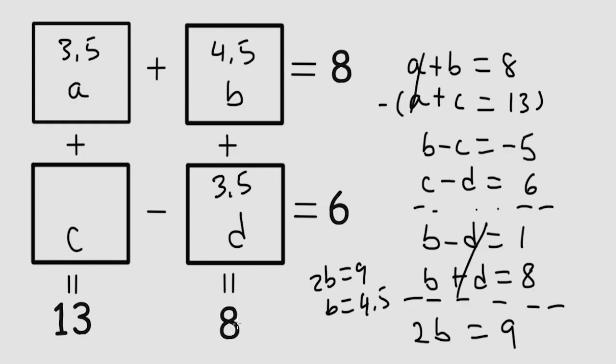So what minus 3.5 gives you 6? 9.5. So 9.5 minus 3.5 gives you 6. And we have all the numbers we need. It's a lot quicker than trying to guess for a while, I believe. Thank you for listening. Please like and subscribe.